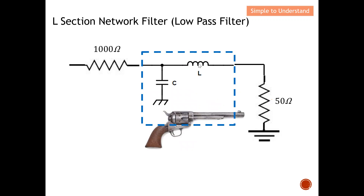The L always points toward the smaller impedance side — in this case 50 ohm. This gun analogy applies to both low pass and high pass configurations equally — it always points to the smaller impedance value. With this I'd like to end the discussion. Please like and subscribe, and thank you so much for your strong support.